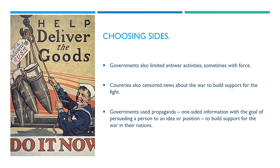Choosing sides. Governments also limited anti-war activity, sometimes with force. Countries also censored news about the war to build support for the fight. Governments used propaganda — one-sided information with the goal of persuading a person to an idea or position — to build support for the war in their nations. Here's an example of a propaganda poster trying to convince people to support the war.